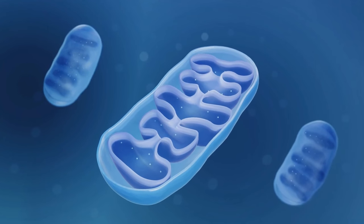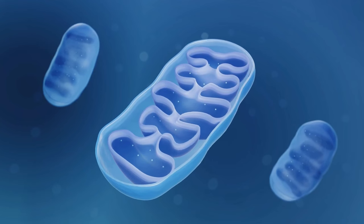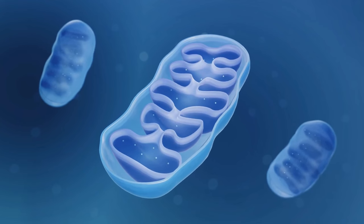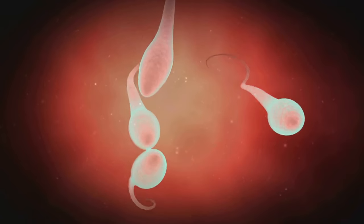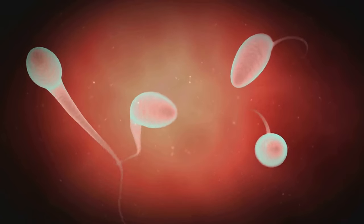But hold on, why does the egg's mitochondria survive while the sperm's mitochondria get the boot? Well, the egg cell is significantly larger and contains many more mitochondria than the sperm. Plus, the sperm uses most of its mitochondria to power its journey towards the egg.